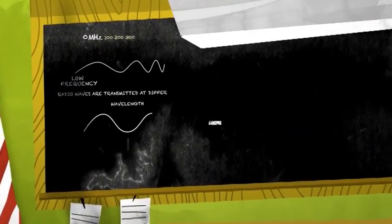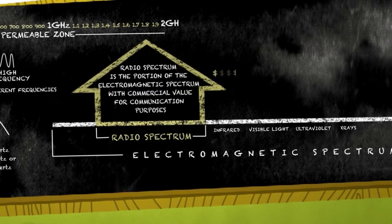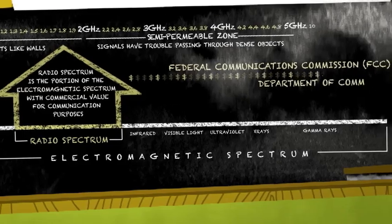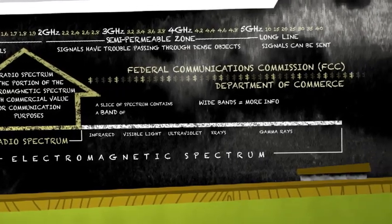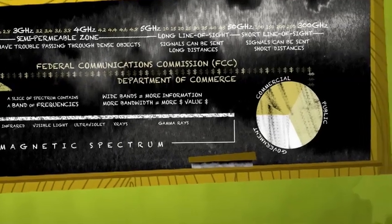Spectrum is divided into bands of frequencies. Its capacity is determined by the ways we organize and use these frequencies. The Federal Communications Commission and the Department of Commerce allocate these bands of spectrum so that we, the people, can benefit from a multitude of commercial, public, and government uses.